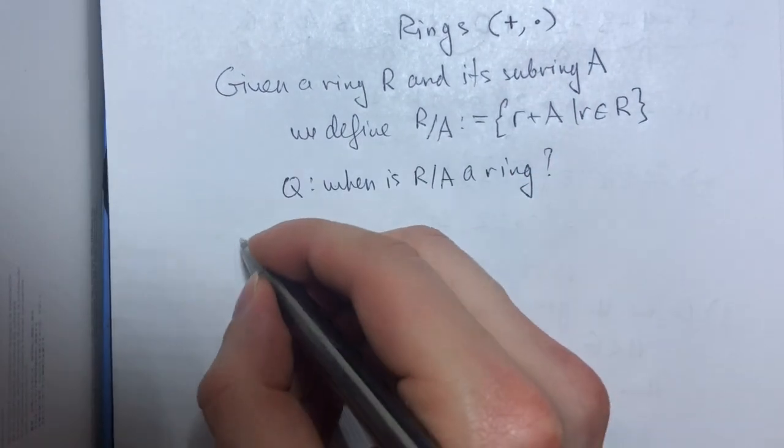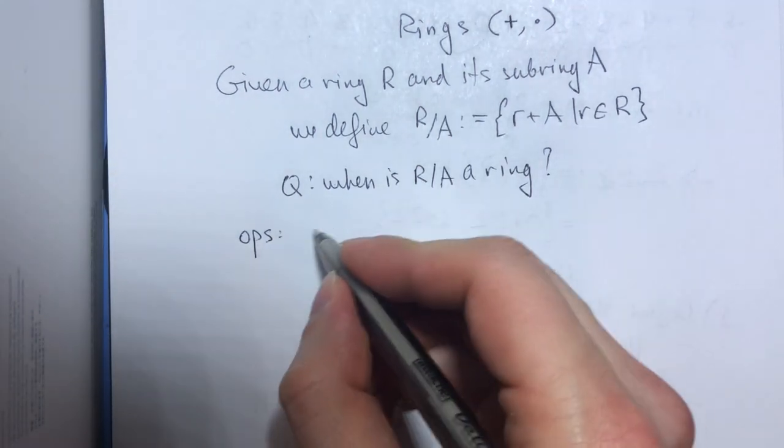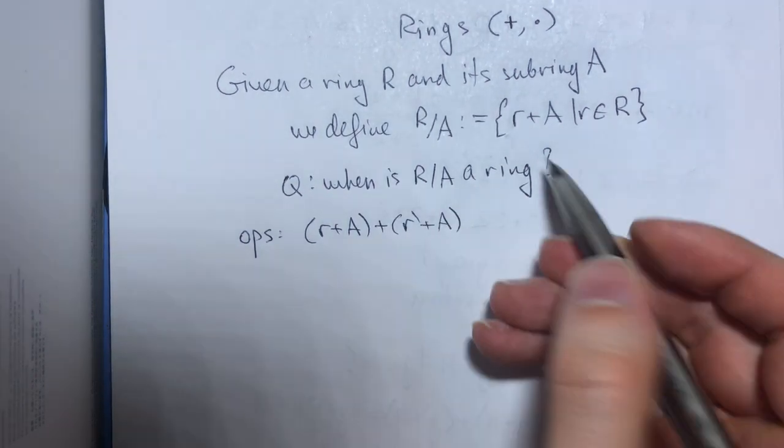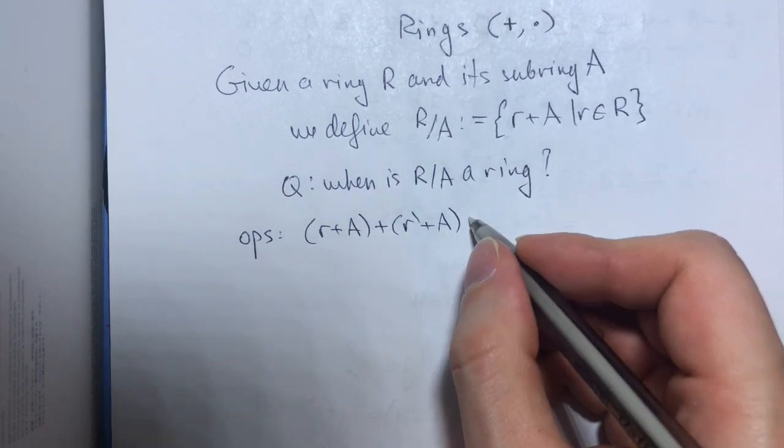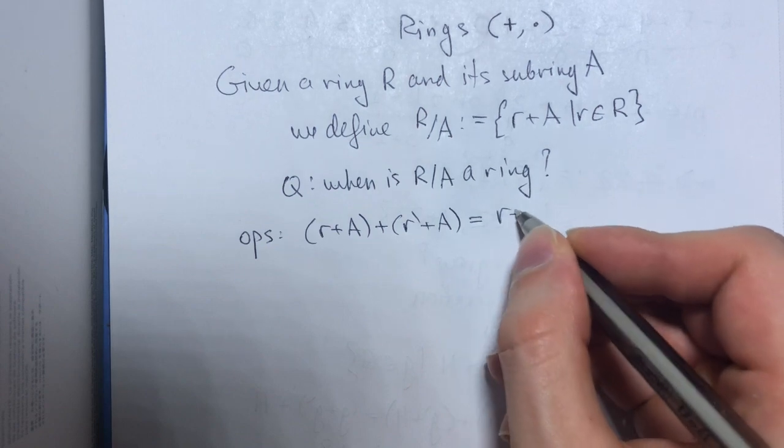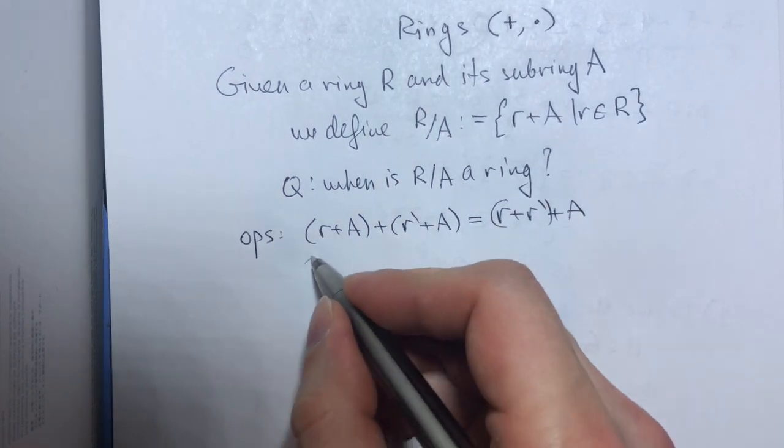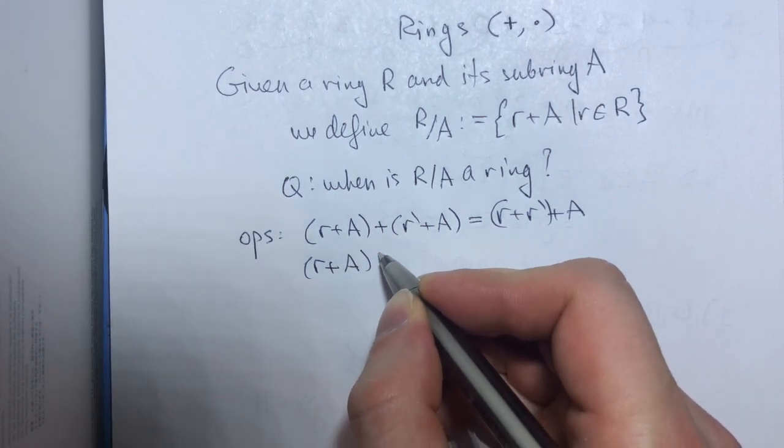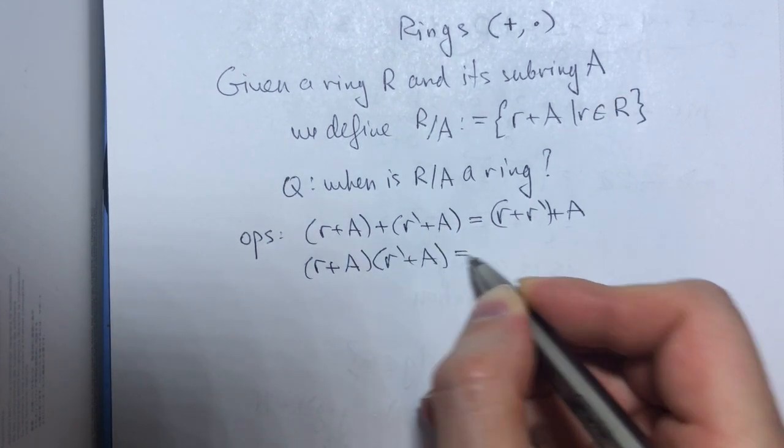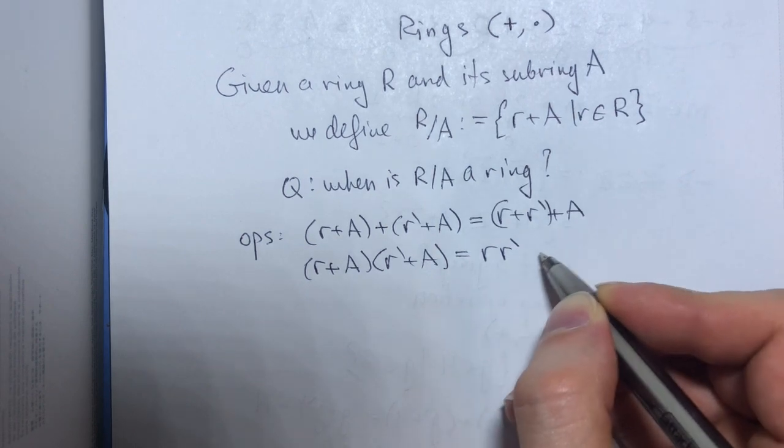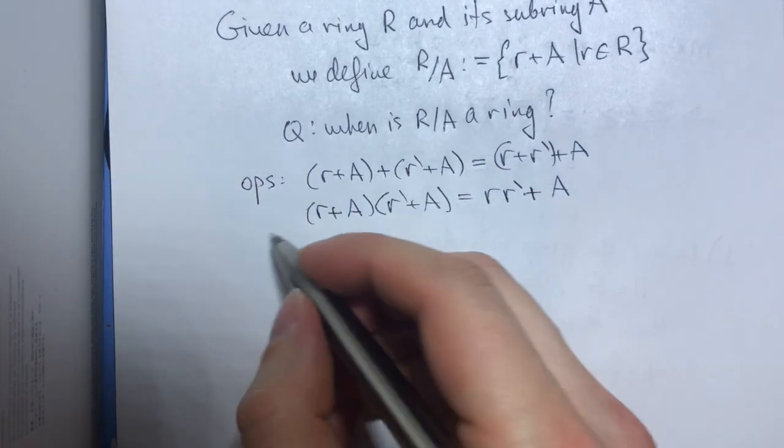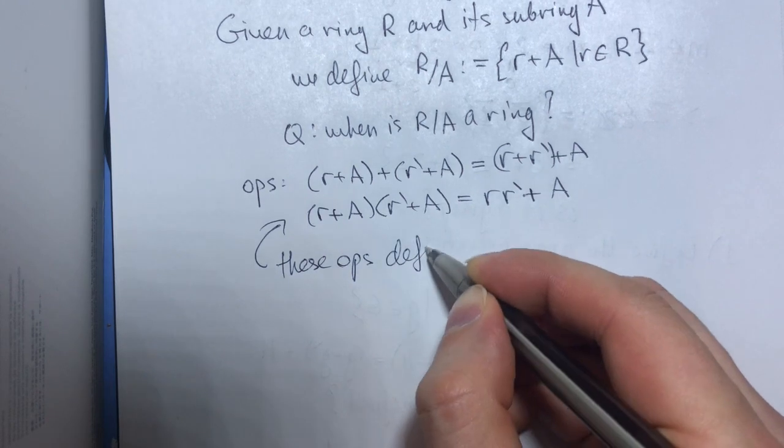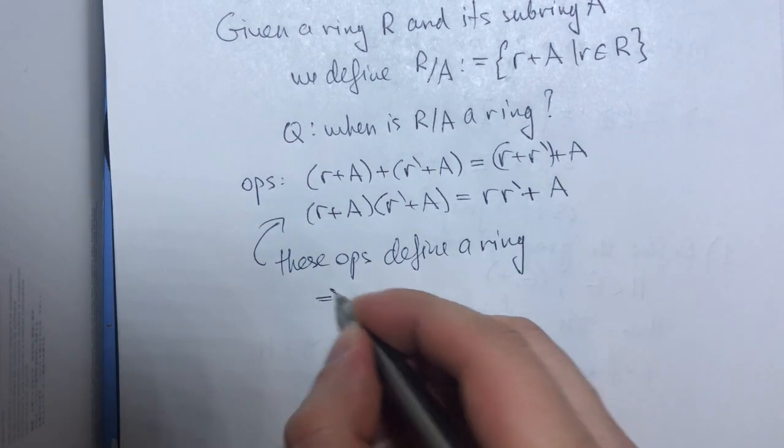Given a ring R and its subring A, we define R quotient A as the following set just like we did with quotient groups. And again the natural question is when is R quotient A a ring? So again we need to define operations and we define them in a similar manner. So if we want to add two cosets we write (r + A) + (r' + A) = (r + r') + A, and if we want to multiply two elements from a quotient ring we write (r + A)(r' + A) = rr' + A.